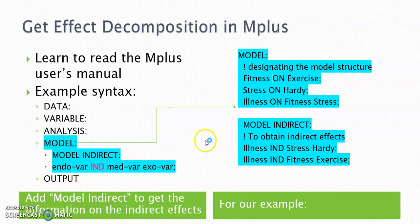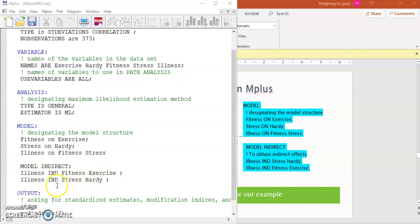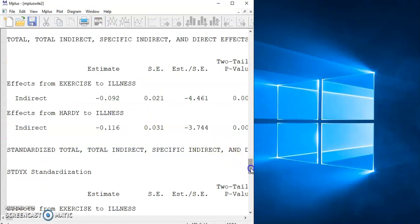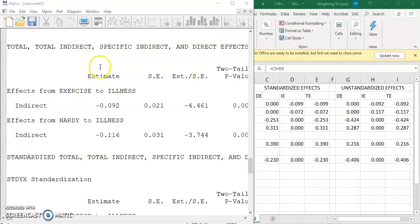In our example, there are two indirect relationships. The first one: illness is the endogenous variable, hardness is the exogenous variable, and stress is the mediation variable between them. The second indirect relationship has illness as the endogenous, exercise as the exogenous, and fitness is the variable between them. Add those lines to your command file, save, and run the analysis. In the output file, after the model solutions, you have the section called total, total indirect, and specific indirect effects — with both unstandardized and standardized solutions.